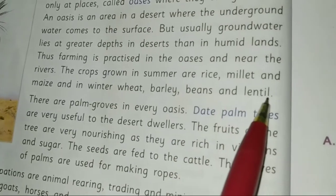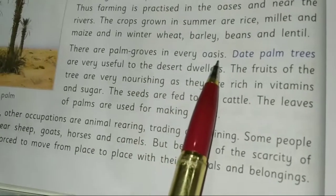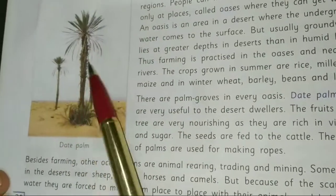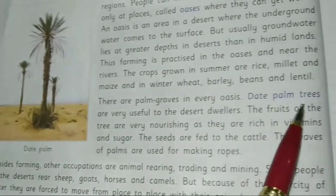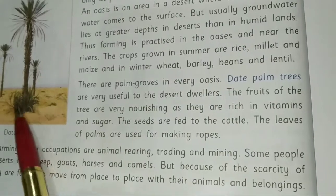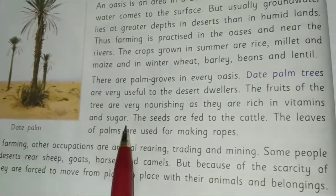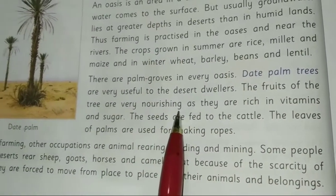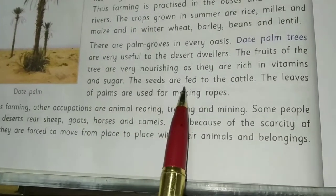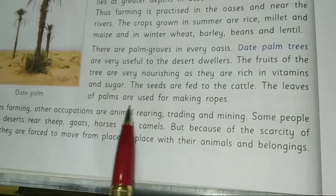Palm trees grow in every oasis and are very useful in the desert. The fruit of the palm tree — dates — is rich in vitamins and sugar. The leaves of palms are used for making ropes and other items.